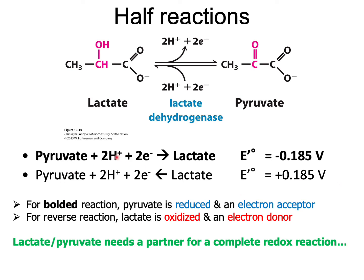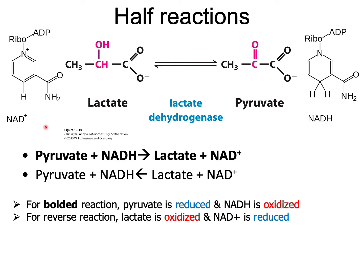For the bolded reduction reaction, pyruvate is reduced and is an electron acceptor. For the reverse reaction, lactate going to pyruvate, lactate is oxidized and hence is an electron donor. Lactate and pyruvate need a partner for a complete redox reaction because this is a redox half reaction, and that partner happens to be NAD+.